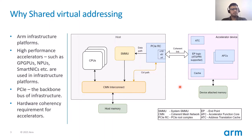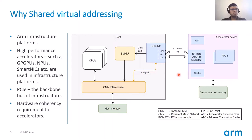Additionally, today's infrastructure platforms also deploy a number of coherency protocols such as CCIX or CXL. In the absence of SVA, programmers are not able to take full advantage of the coherency link.